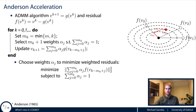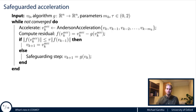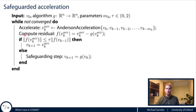People usually wrap this acceleration method into a safeguarding scheme, which is also what we do in COSMO. The Anderson acceleration function takes into account previous iterates and returns a candidate point. Before accepting this point, we check its quality by computing the residual and taking its norm. Only if it's smaller than parameter tau times the previous residual do we accept the point. Otherwise we discard the acceleration and perform a normal ADMM step.